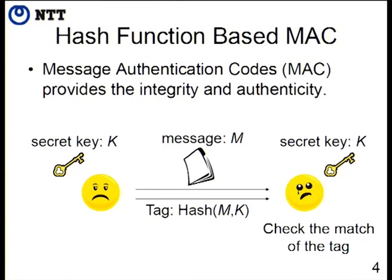This slide describes a very fundamental concept, which is a message authentication code. It provides integrity and authenticity. The sender and receiver share a secret key K. When the sender sends a message M to the receiver, he also sends the tag, which is computed by the hash function taking M and K as input. After the receiver receives M, he computes the tag value using the received M and shared key K, and checks the match of the tag and his results, verifying integrity and authenticity.